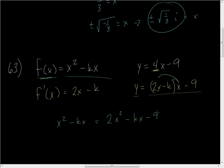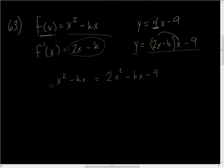Our goal is to find the x-coordinate. The negative kx terms cancel out when you add to both sides, so I get x squared equals 2x squared minus 9. Moving the 9 over and the x squared over, this gives me 9 equals x squared. Solving for x, that means x equals plus or minus 3.